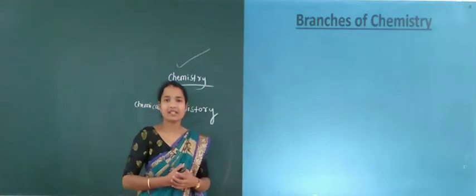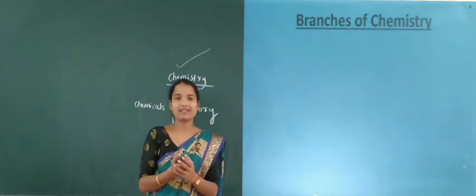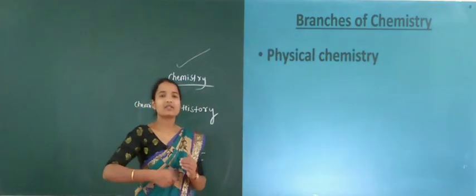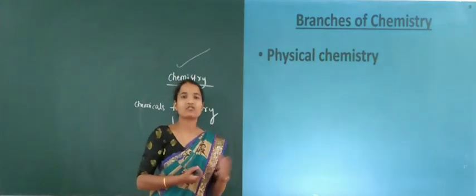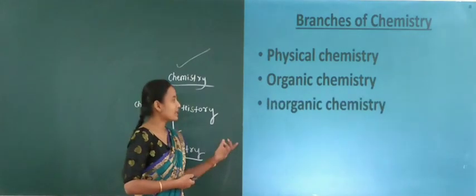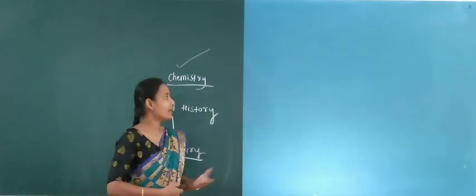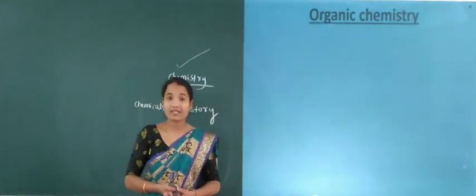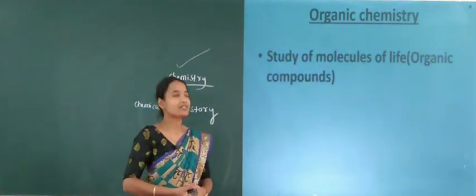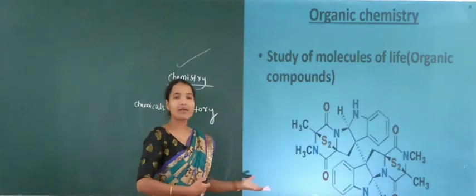Branches of chemistry — already you know three sections: physical, organic, and inorganic. But according to your BSA section, different types of chemistry branches will be studied here. First is physical chemistry, then organic chemistry, inorganic chemistry, analytical chemistry, spectroscopy, and industrial chemistry. Organic chemistry is the study of molecules of life — that is, organic compounds.